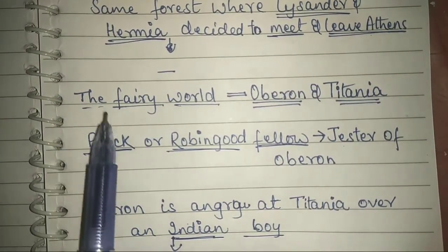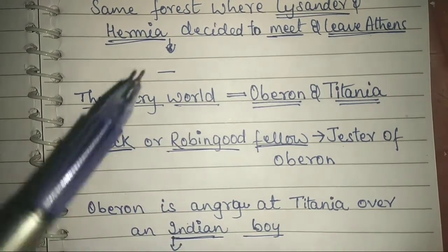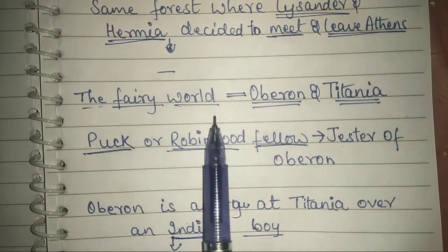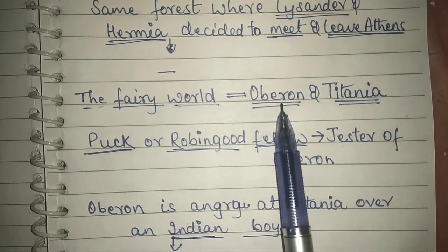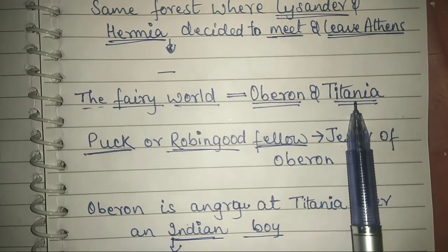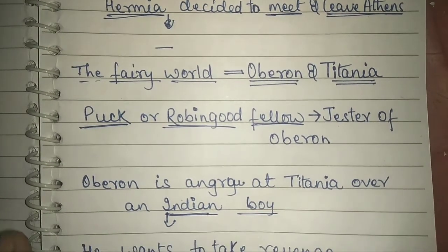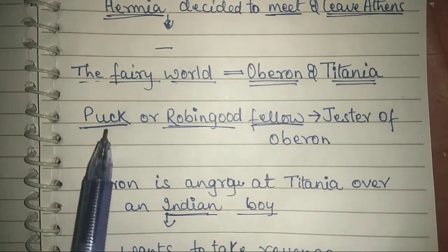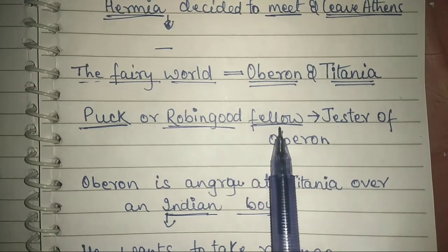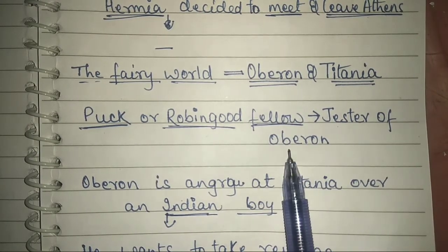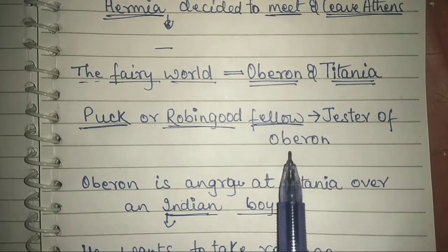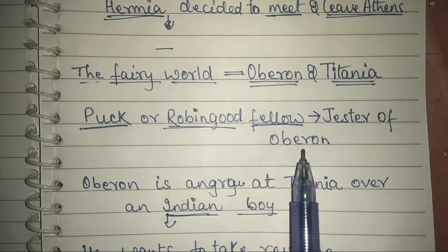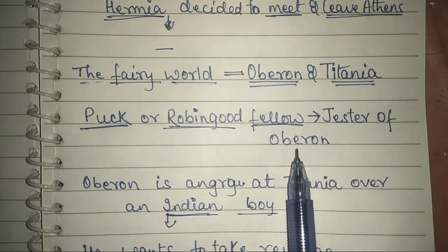After that, we are taken to the other world — the fairy world. These things are happening in the human world, and these things are happening in the fairy world. In the fairy world, Oberon is the king and Titania is the queen. There is also another mischievous character — his name is Puck, whose real name is Robin Goodfellow. He is the jester of Oberon, the king of the fairy world. Puck used to make Oberon happy with his acting and his jokes.